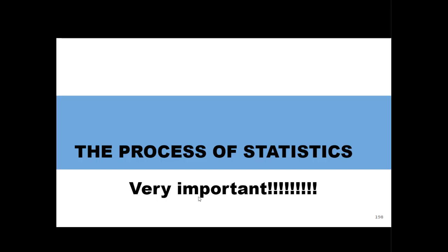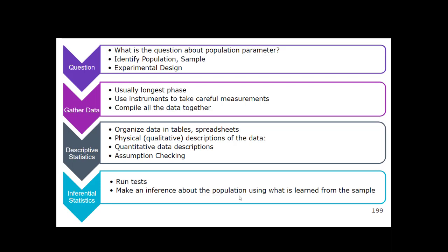The statistical process has four discrete steps. The first is always the question. The statistical process always starts with a question about the population — write this down — the question is always in terms of the population, not the sample. You're asking about a statistic about the population, which is called a parameter, whether it's a proportion or a mean. During this phase you're also identifying the population, figuring out how to get your sample, and developing your experimental design.